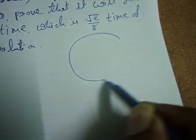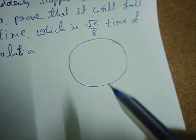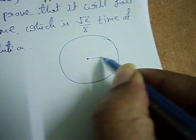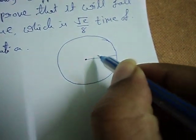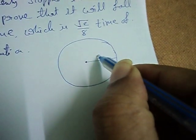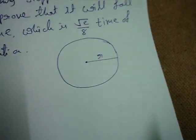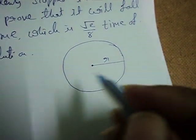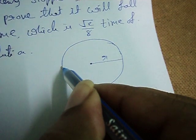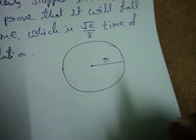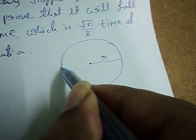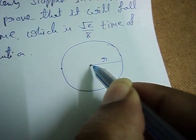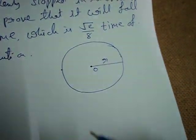Let us say this is the circular motion of the particle. This is the center, and from here to here it is the radius R. Now the planet is moving in a circle of radius R. Let us say the planet is stopped here, and now it is going to fall into the sun which is at the origin O.